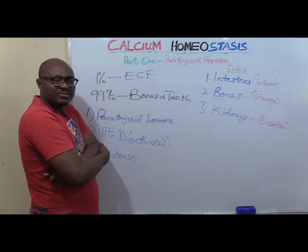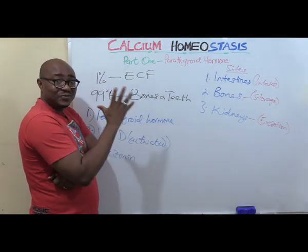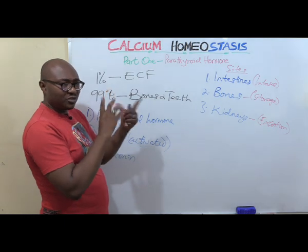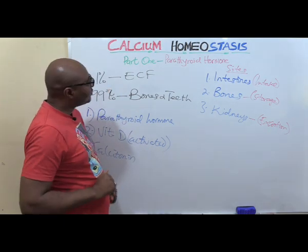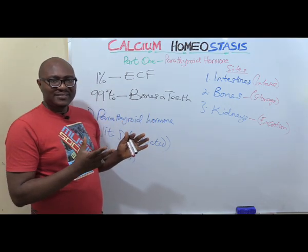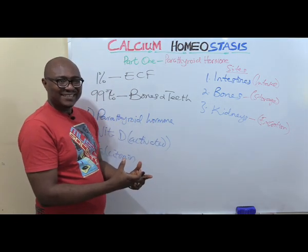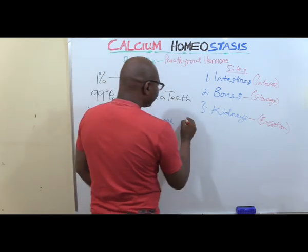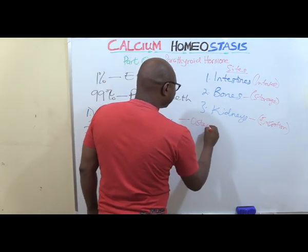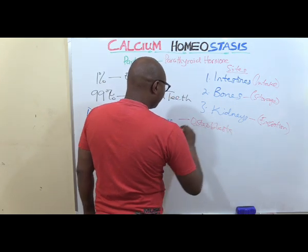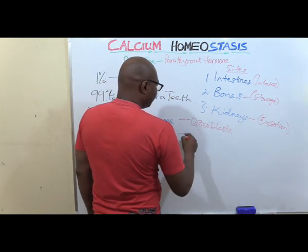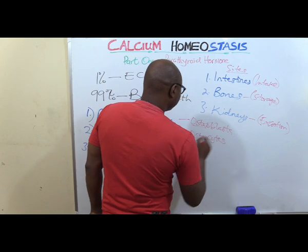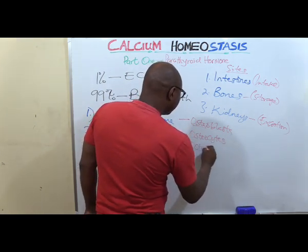We need to know something about bone to help us understand the functions of parathyroid hormone. The bone is a living tissue — just because you see it very hard like that doesn't mean it's not living. It has three types of cells: osteoblasts, osteocytes, and osteoclasts.